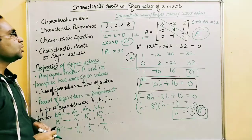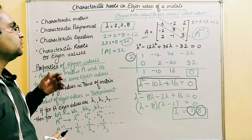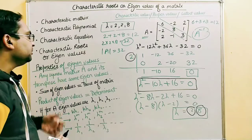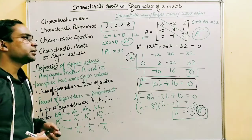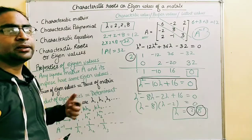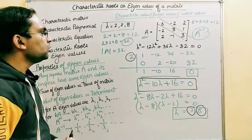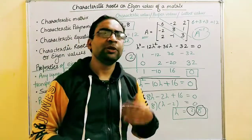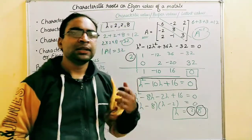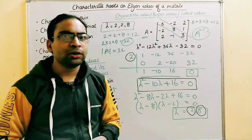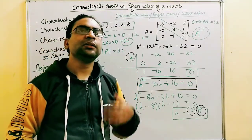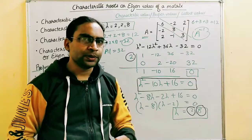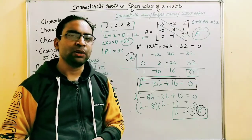So these are the properties of eigenvalues, also called characteristic roots. In the next lesson we will be talking about the Cayley-Hamilton theorem and eigenvectors. Thank you so much.